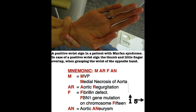The congenital cardiac defects associated with Marfan syndrome are mitral valve prolapse (MVP), thoracic aortic aneurysm and dissection, and aortic regurgitation.